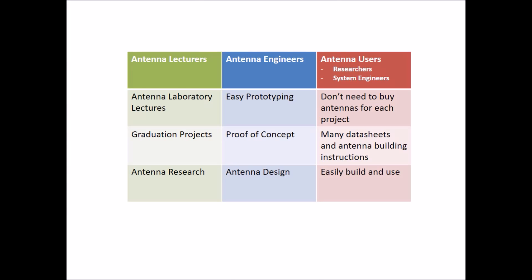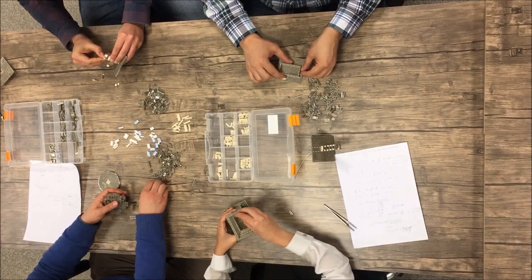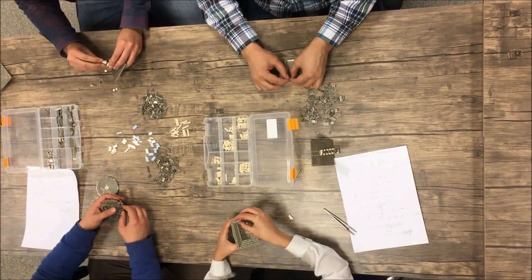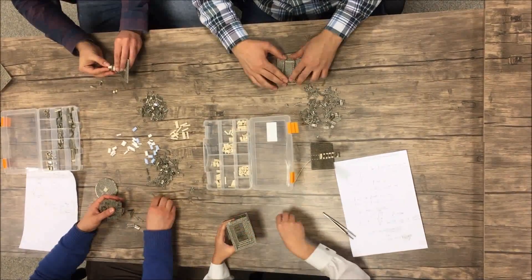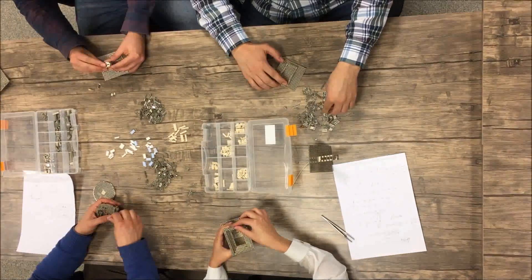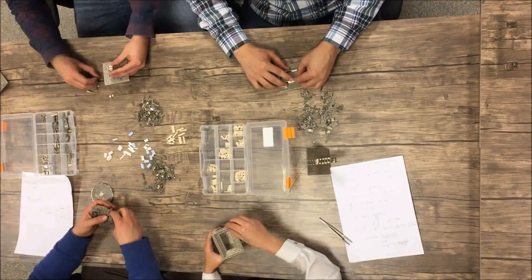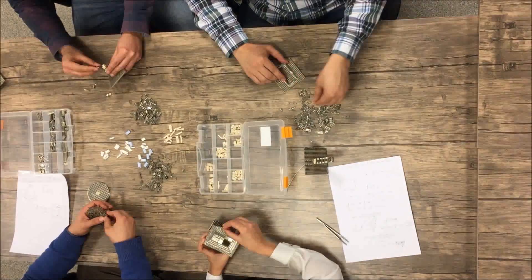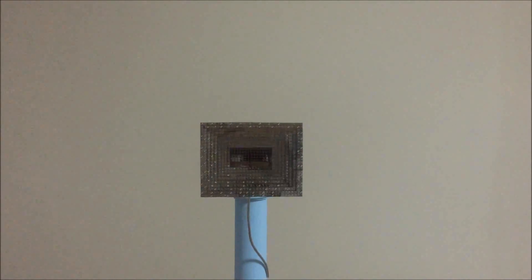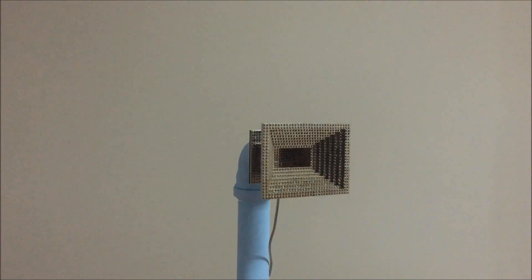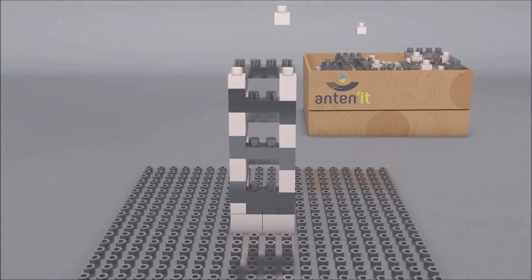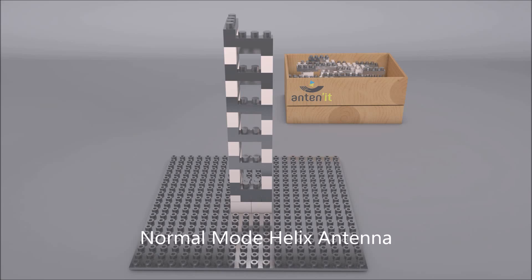Let's explain one by one. Antennate increases the quality of antenna laboratory lectures by its rapid antenna design feature. Students can design and measure their own antennas. There are supporting slides and experiment sheets for designing many types of antennas. They include the theoretical background of antennas and examples. Students can check their results with the expected ones.